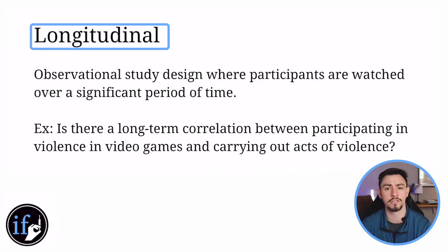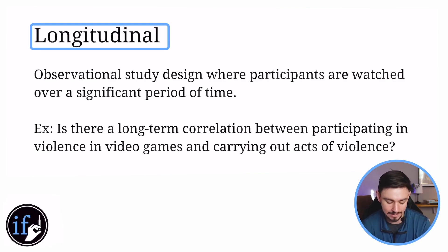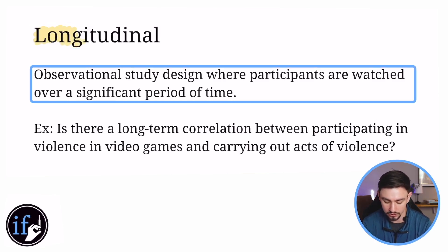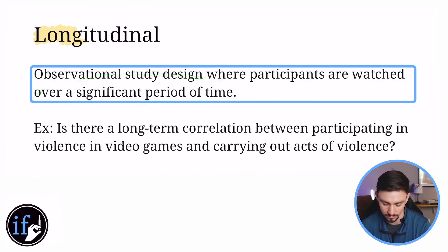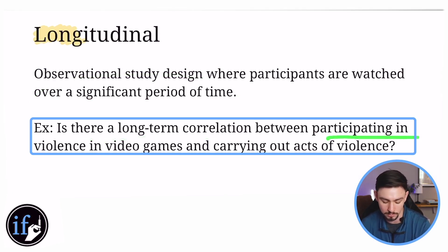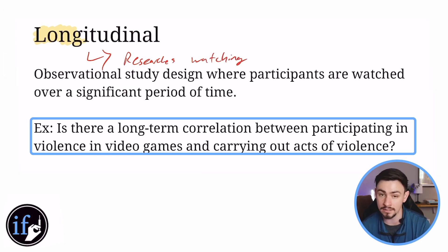Shifting over to longitudinal and cross-sectional — now I'm thinking about timelines rather than what participants have or are exposed to. Longitudinal is easy because it has the word 'long' in it. It's an observational study where participants are watched for a significant or long period of time. A good example: is there a long-term correlation between playing violent video games and carrying out acts of violence? The key is that researchers check in over a long time — if they check in every three years, that's longitudinal.